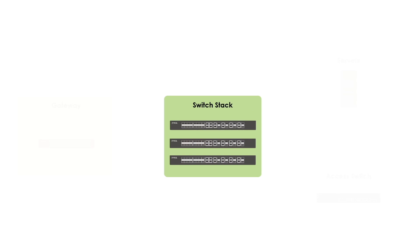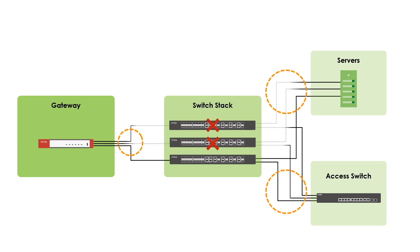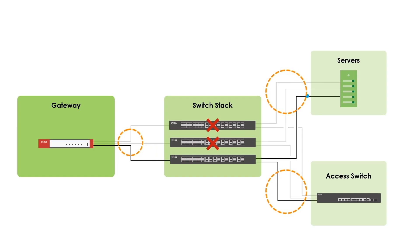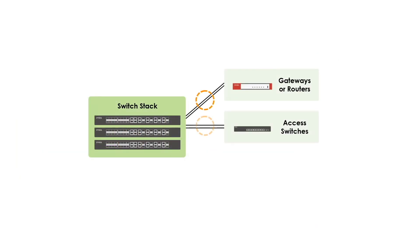So whether this is a link failure or if an entire unit shuts down, the switch stack effectively distributes traffic to any of its remaining active links. Best of all, link aggregation is a pretty standard technology that is supported by a wide range of network devices — these are your gateways or routers, servers, and other access switches.